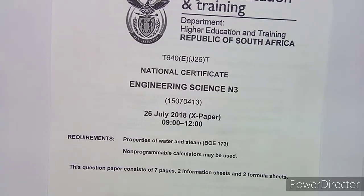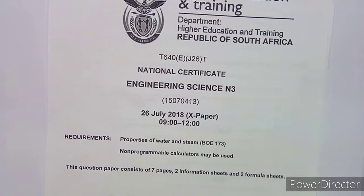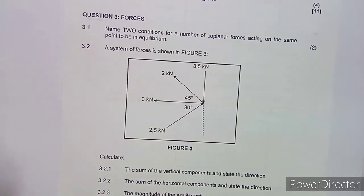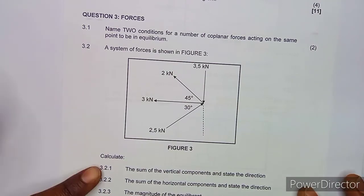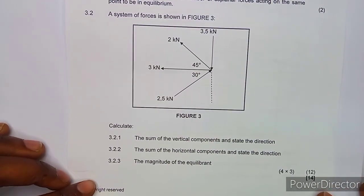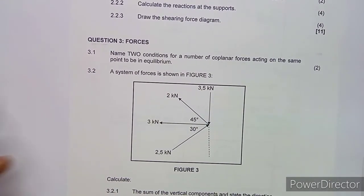Welcome back to my channel. We are working on engineering science, specifically a question paper written in July 2018. In this case we shall be working on forces. We want to rush through this question paper — Question 3 is on forces and carries a total of 14 marks, which is something we are not supposed to lose in the exam.